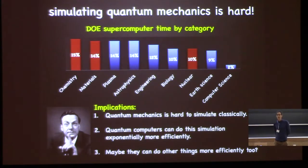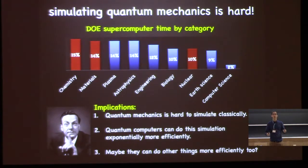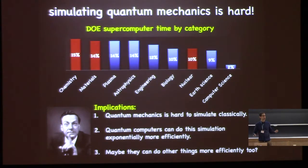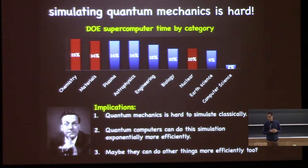This was observed by Feynman and Yuri Manin independently in the Soviet Union in the 80s. Quantum mechanics is hard to simulate classically — no way around that. People have tried since the basic equations were written down, and our solutions are always approximate, always incomplete, only work in special cases. The full solution always takes exponential time. We've never yet found a way around that.